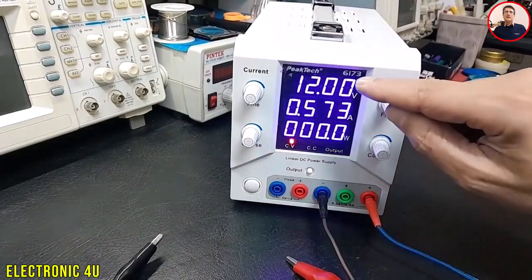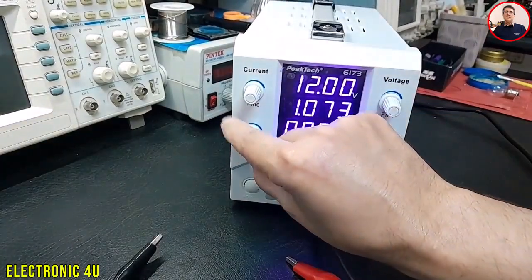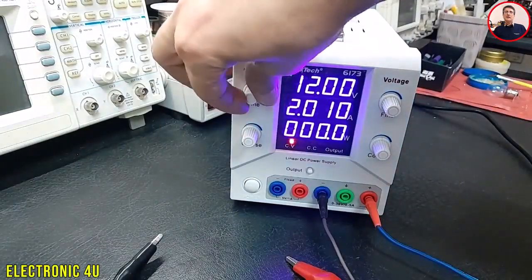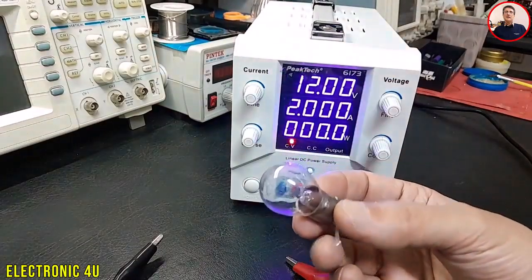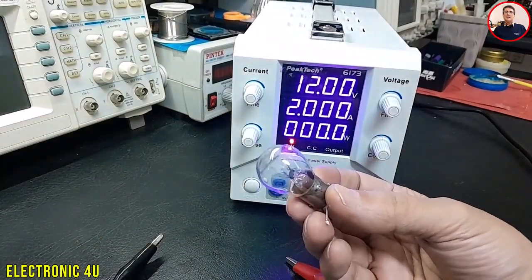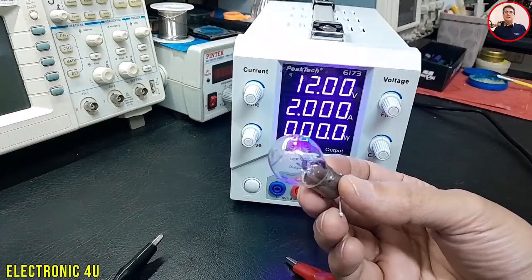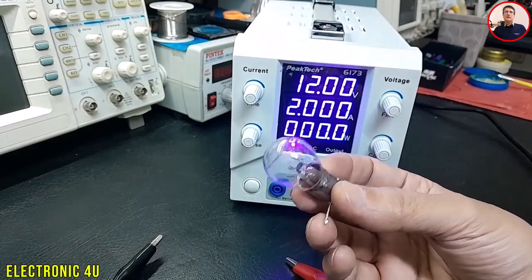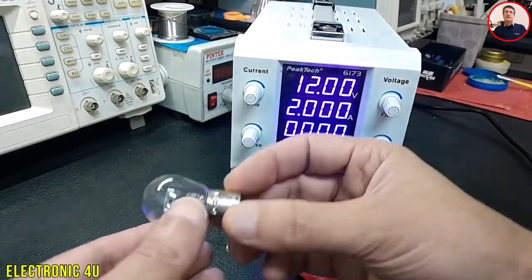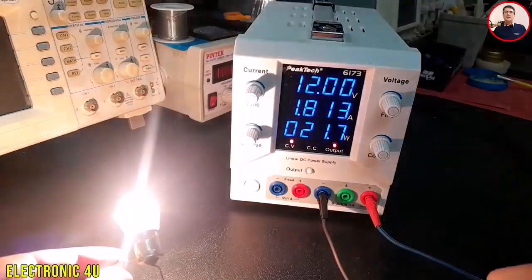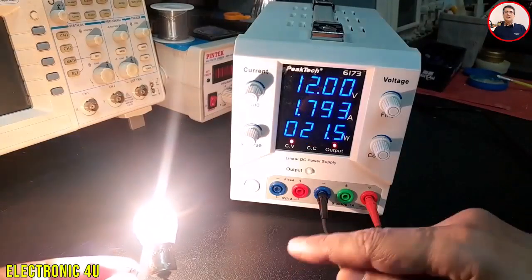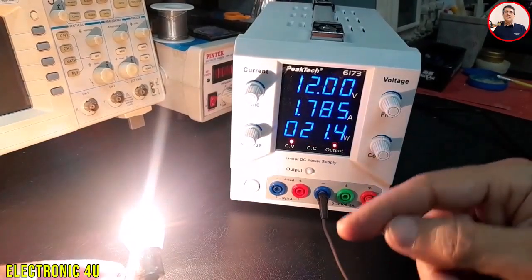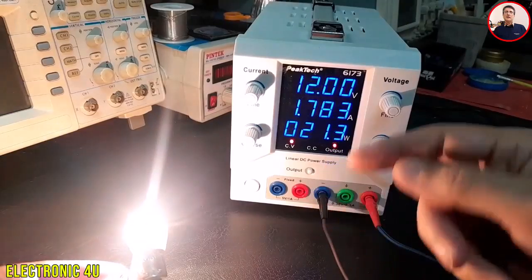I set the device to 12 volts and 2 amps. This lamp uses 1.7 amps. If we connect this lamp to the output, because the required current is less than the set current, the device works in CV mode and the voltage stays at 12 volts. So the voltage stays at the set value and the current depends on the load.